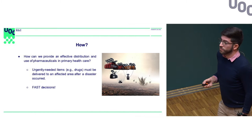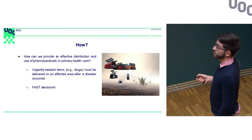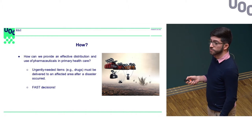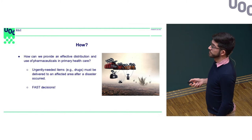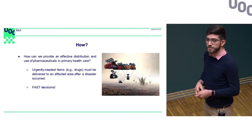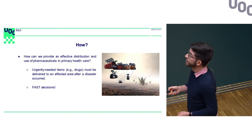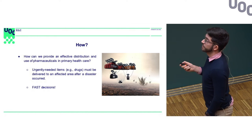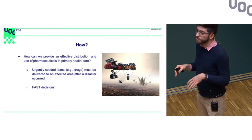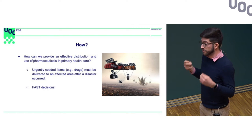By doing this, we are trying to promote a return to normalcy when a disaster occurs. So how can we provide an effective distribution of drugs and pharmaceuticals in primary health in a disaster situation? We have to deliver urgently needed items — drugs, medicines, blood, or defibrillators — to affected areas after disasters occur.